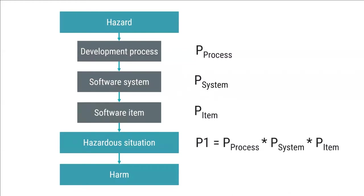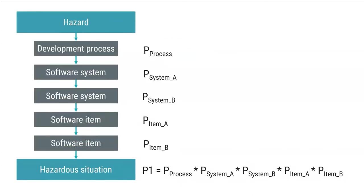When working with software risk management, your goal is to reduce the likelihood of failure within the software, and you have several options. There is nothing holding you back from combining risk controls from all three alternatives to further reduce P1. If you combine several risk controls, it is logical to assume the likelihood of failure will become lower. You are free to multiply as many numbers as you want, but be careful — if you multiply many small numbers you will end up with zero, and zero probability of failure in software is unfortunately not feasible.